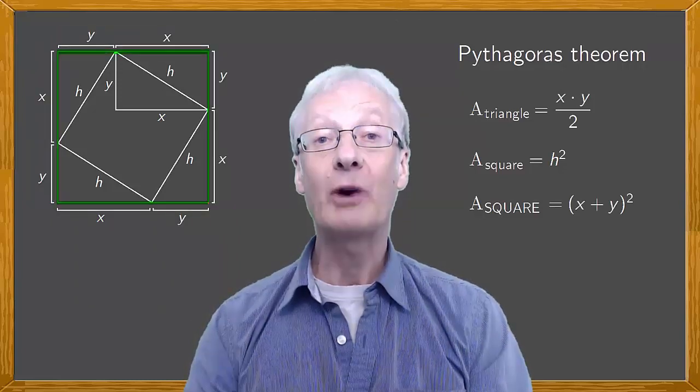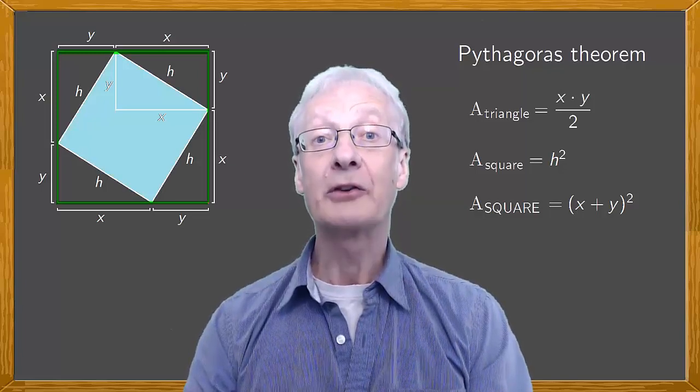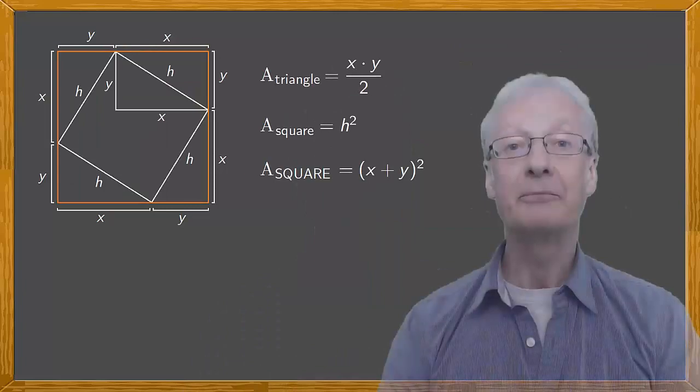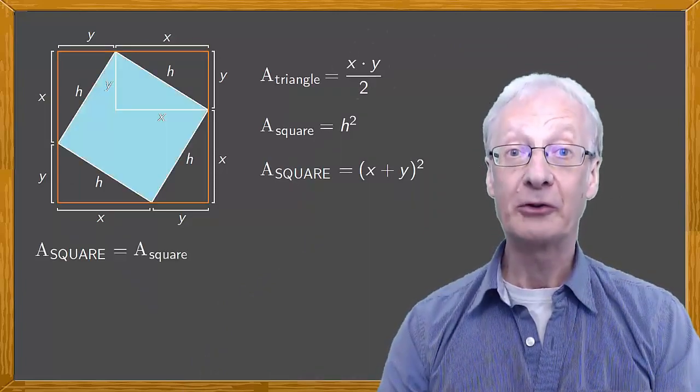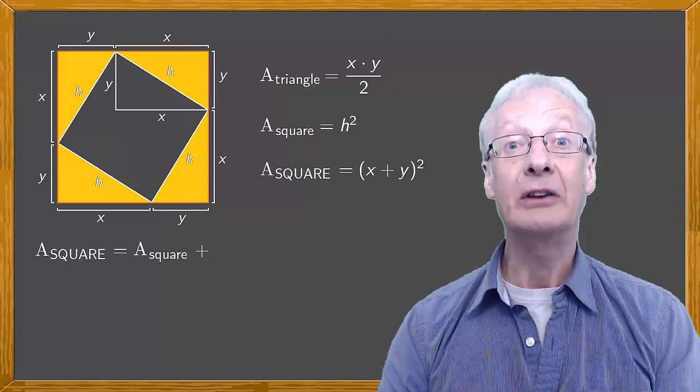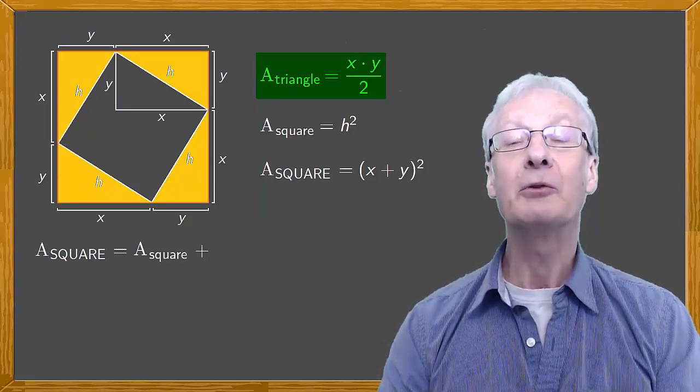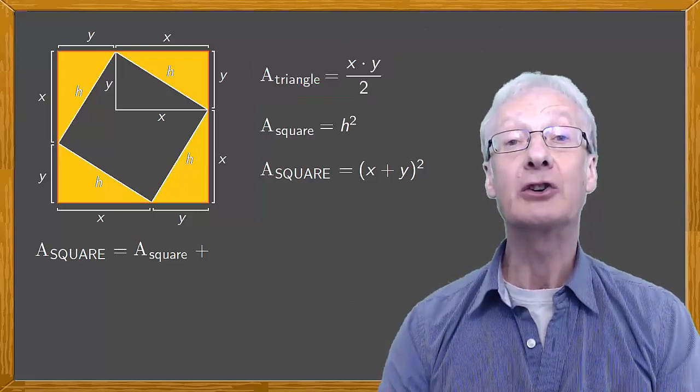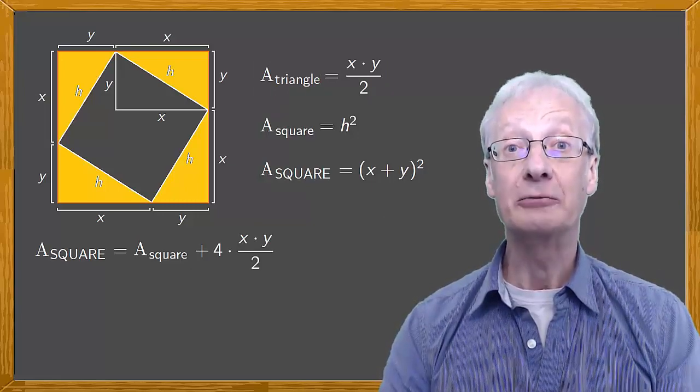Notice that this square is the union of the inner square plus these four triangles. So, the area of the big square is the area of the small square plus the area of these triangles. There are four equal triangles with an area of x times y divided by 2, giving a total area of 4 times x times y divided by 2.